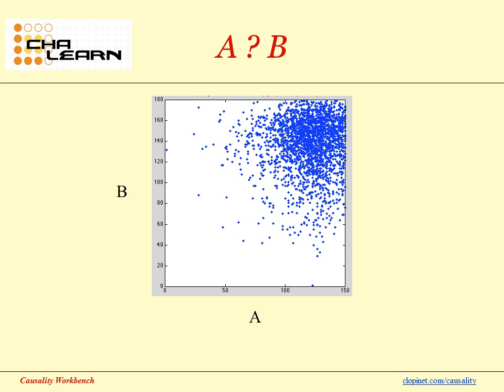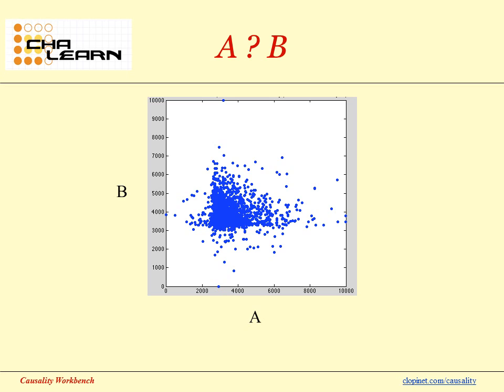Here's another one. Does A cause B, or B cause A? That one's easy — they're independent. And another one: does A cause B or B cause A? Well, this is the remaining case: there is a common cause to A and B. The case is symmetrical — A doesn't cause B, and B doesn't cause A. There is a common cause.